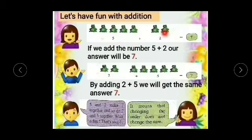Now let's change the order. We'll take 2 plus 5. So 1, 2, 3, 4, 5, 6, 7. 2 plus 5 is also 7. By adding 2 plus 5, we'll get the same answer: 7. 5 and 2 make 7 together, and so do 2 and 5 together. What a fun, that's nice.